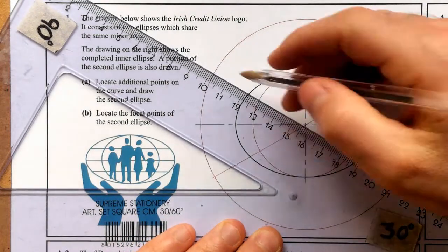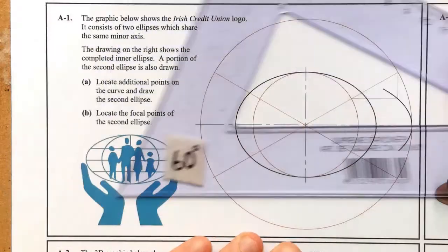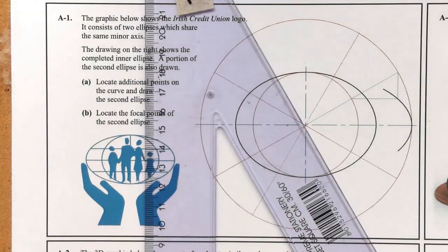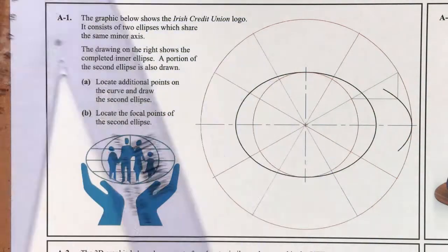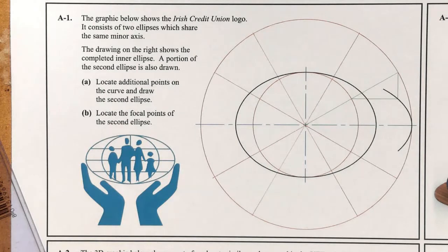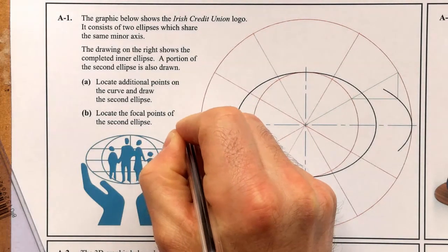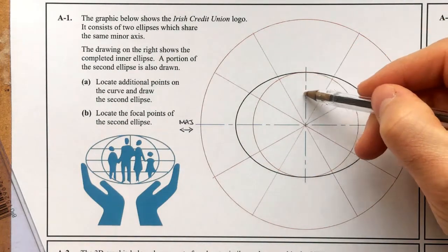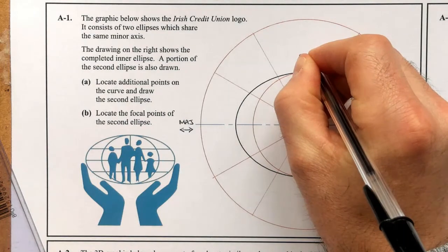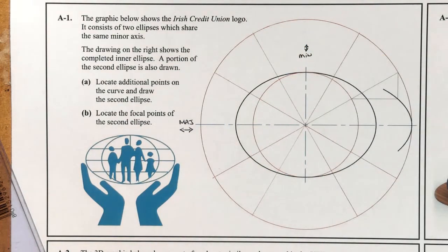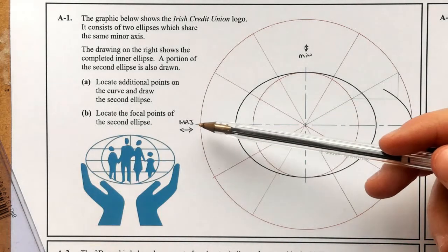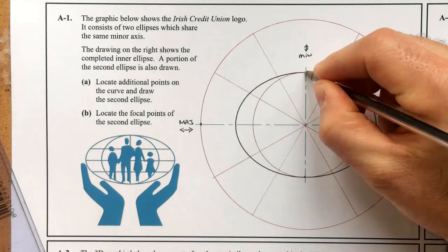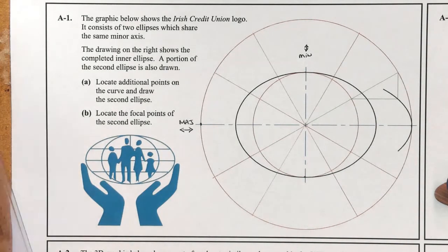We're going to split our circles at 30 and 60 degrees — 30 degrees one way, 30 degrees the other way, then 60 and 60. I always note the direction of my major axis, writing 'MAJ'; in this case the major runs left to right. I also write in my minor, which runs vertically up and down. The extents of the major are points at each end, and likewise for the minor.